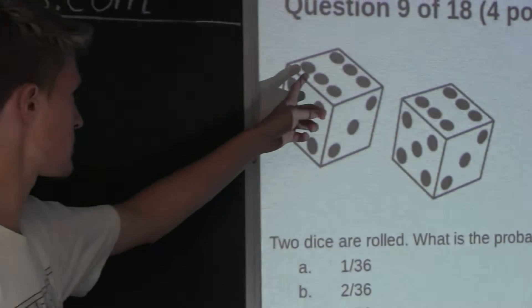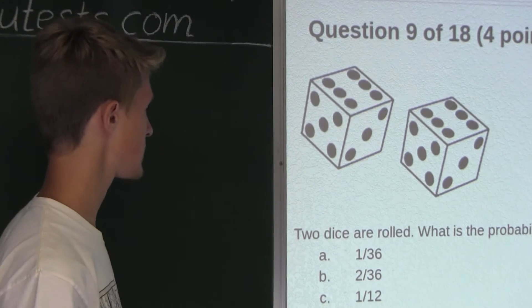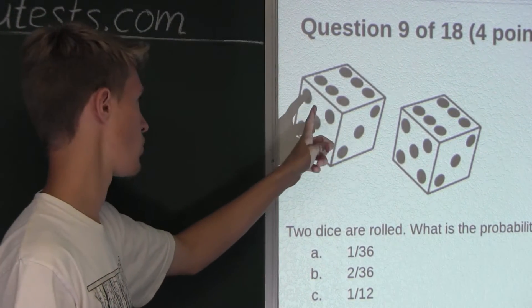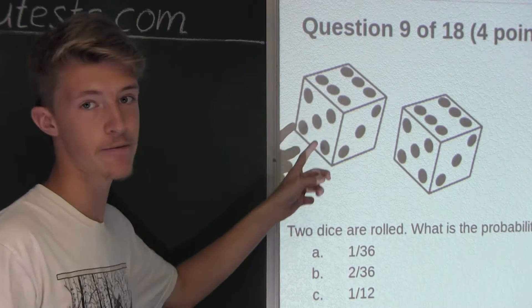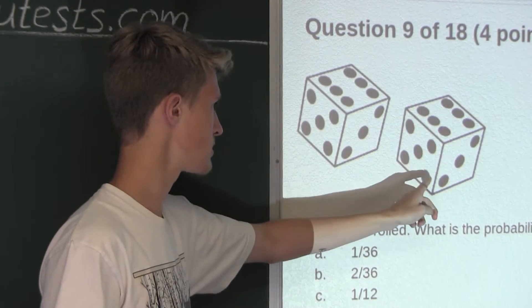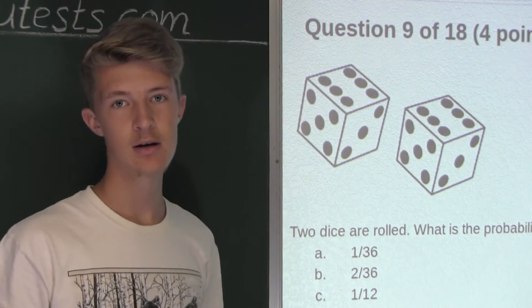There are six possible outcomes for the first die, which are the numbers one through six, and for each of those six, there are six possible outcomes for the second die.